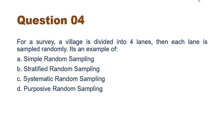Now reading the question again: for a survey, a village is divided into four lanes, then each lane is sampled randomly. So of course, it is an example of stratified random sampling.